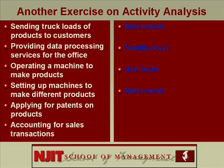Applying for patents on products — that's product level. Accounting for sales transactions is a tough one; you could actually make a case for each category depending on how your company does business. I'd go with facility level, because accounting for sales transactions is common to all the products. I think you really know step two.